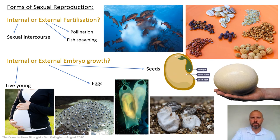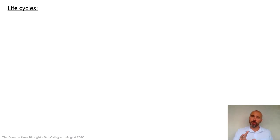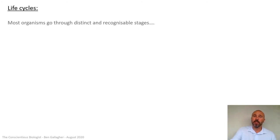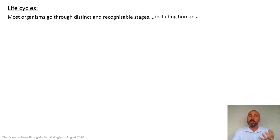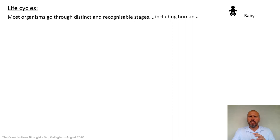All organisms have evolved such a wide range of really weird reproductive methods. The last thing we're going to talk about is life cycles. There are loads of weird ways in which creatures make babies, but let's look at some of the weirder life cycles as well. Most organisms go through distinct and recognizable stages in their life.